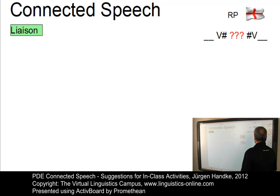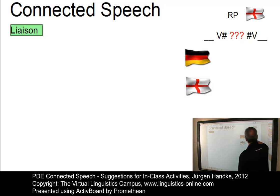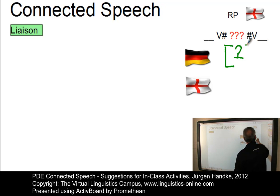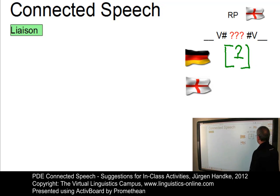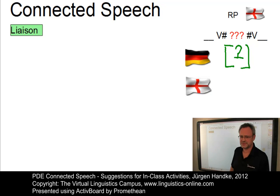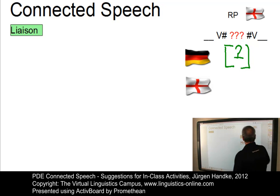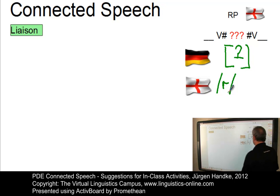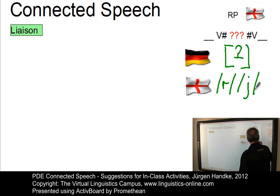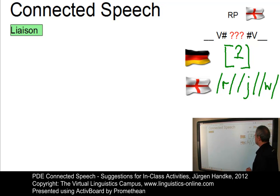In German, for example, we use a glottal stop — a particular allophone used between two words across word boundaries. In present-day English, by contrast, we either use an R, inserting a phoneme, or we can insert approximants such as the palatal or the labio-velar approximant.